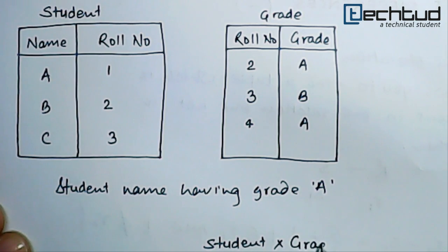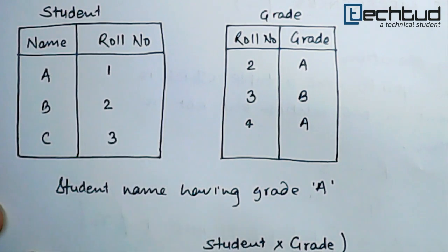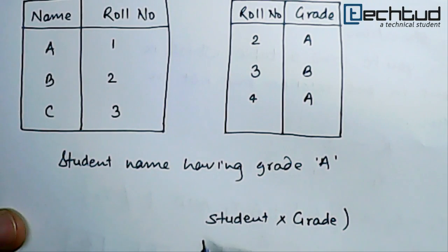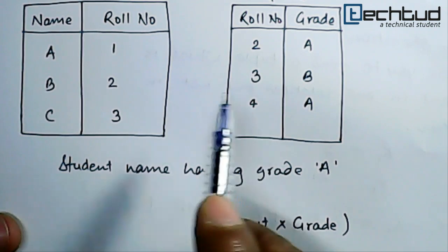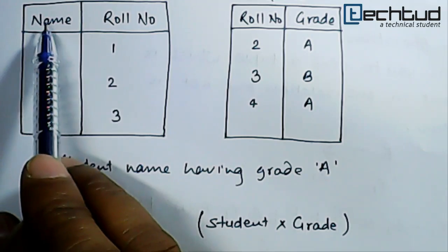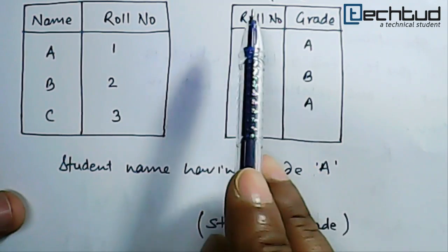Now I am not going to show you the cross product between these two tables, it will go longer. I will show in notation. So first of all if we find out the cross product we will have three into three, nine tuples in a relation having these name, roll number, and grade as a column, and roll number and grade also will be there.